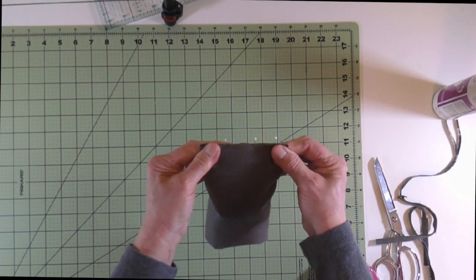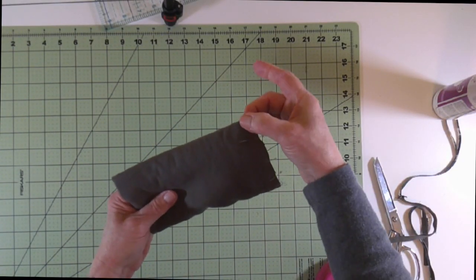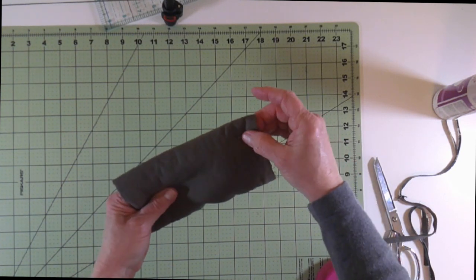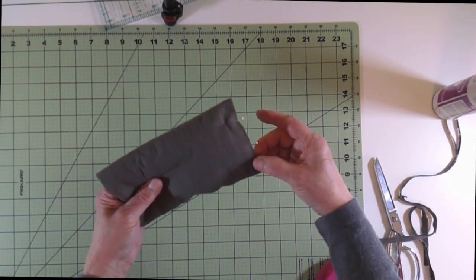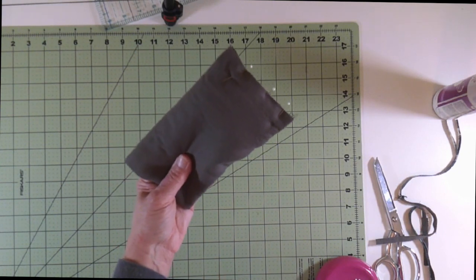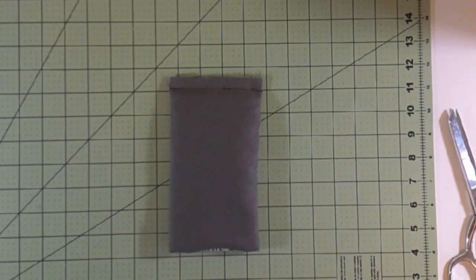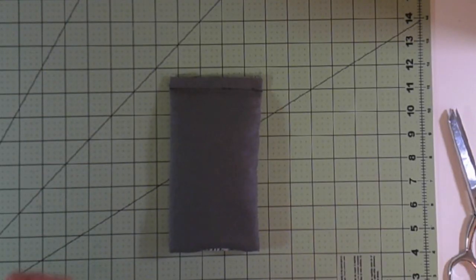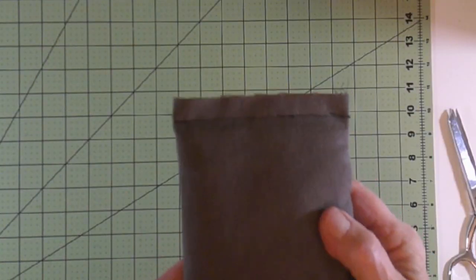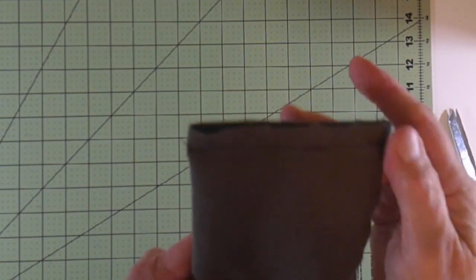Now one last seam. We're going to just stitch across this opening half an inch, and then we're going to trim it, turn it right side out, and you're finished. Now you see there's my half inch seam.